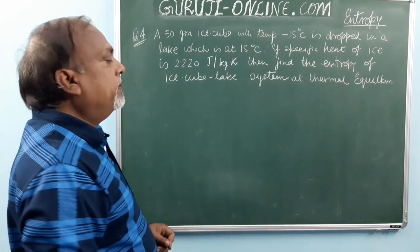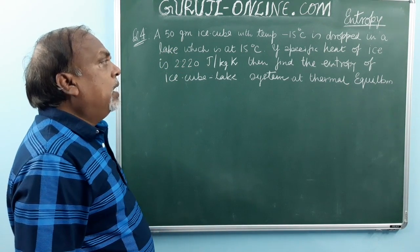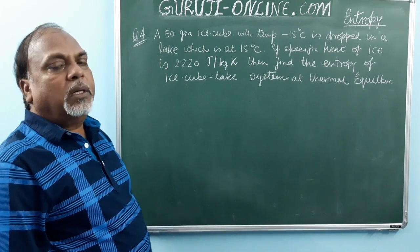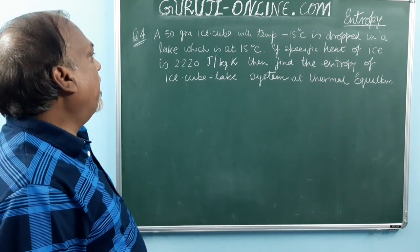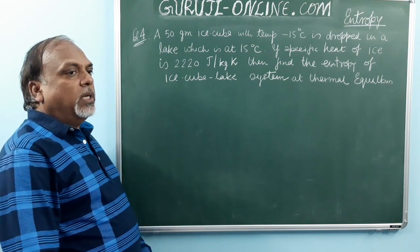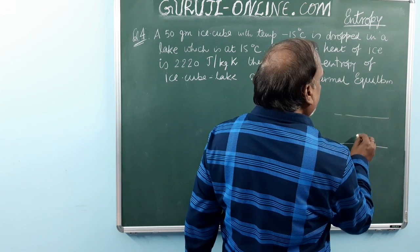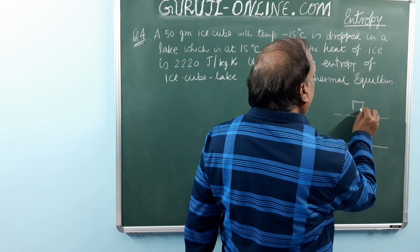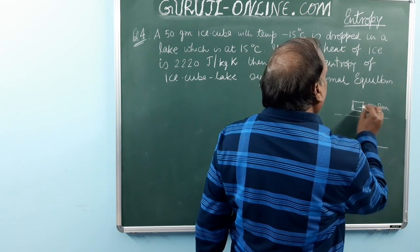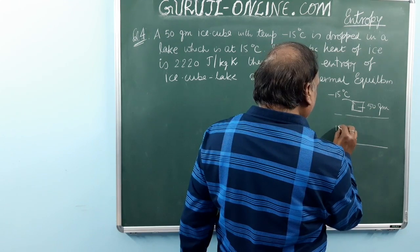This is the fourth question. A 50 gram ice cube at minus 15 degrees centigrade is dropped into a lake where the water is at 15 degrees centigrade. Given the specific heat of ice, find the entropy of the ice-lake system. Since the lake is a vast reservoir at 15°C, it will not change temperature; at thermal equilibrium the temperature will remain at 15°C.